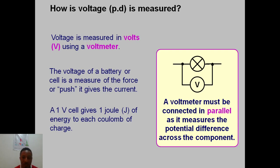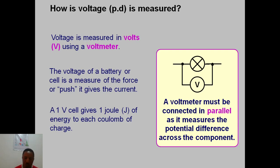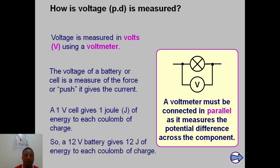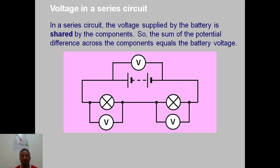The voltage of a battery or cell is the measure of the force or push it gives to charge — this is the electromotive force. It is the energy produced for a charge to carry through the circuit. A one-volt cell gives one joule of energy for each coulomb of charge.